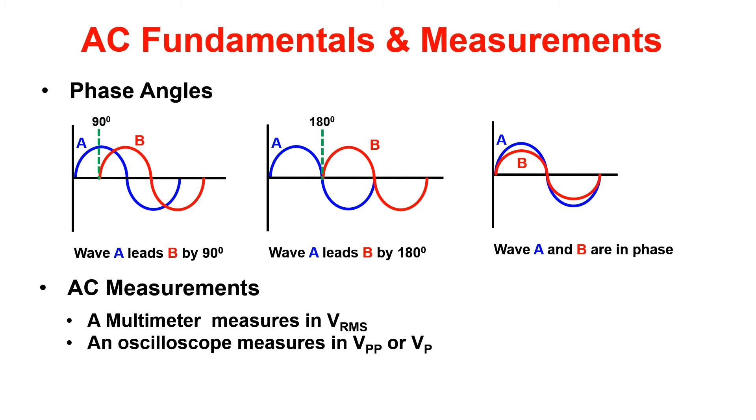AC measurements can be measured using two pieces of equipment. The first being a multimeter, which you've already worked with. However, AC measurements using a multimeter are measured in volts RMS. An O-scope or oscilloscope can also be used to see the actual waveform and perform measurements. These values will be in volts peak or volts peak to peak.